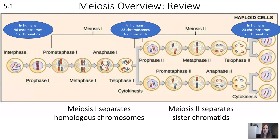In humans, most of our cells have 46 chromosomes and 46 chromatids — one chromatid per chromosome. After DNA replication, which occurs before meiosis, we get twice the number of chromatids. So on the left, following interphase, we have 46 chromosomes and 92 chromatids.